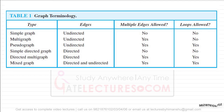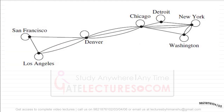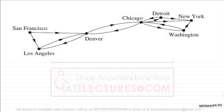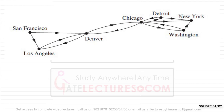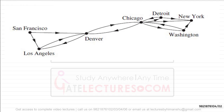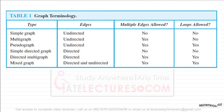A simple directed graph means multiple edges are not allowed and loops are not allowed, but directions are given. For example, between San Francisco and Denver there is a directed edge from San Francisco to Denver, but no edge from Denver to San Francisco. This represents a simple directed graph.